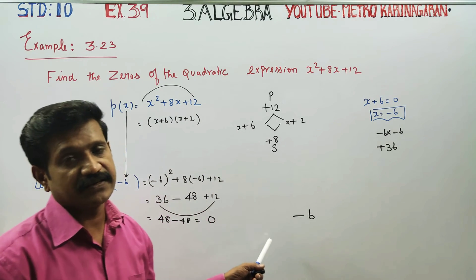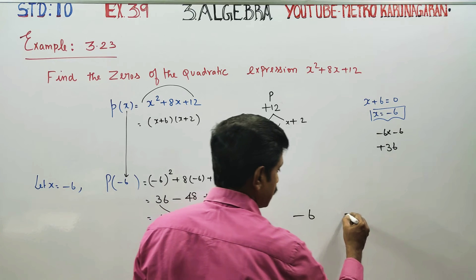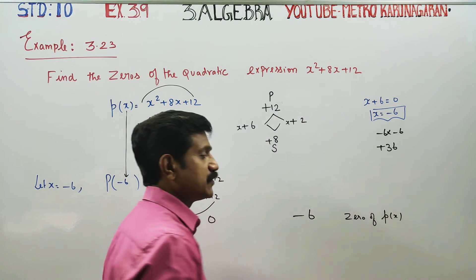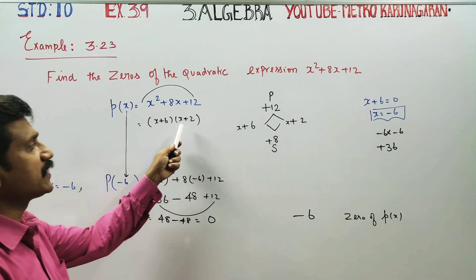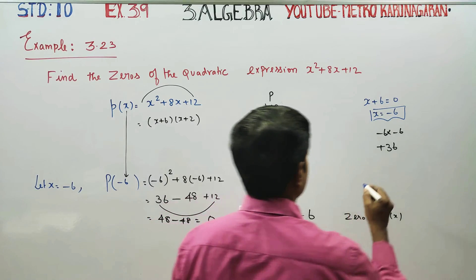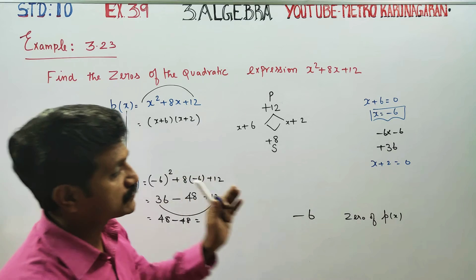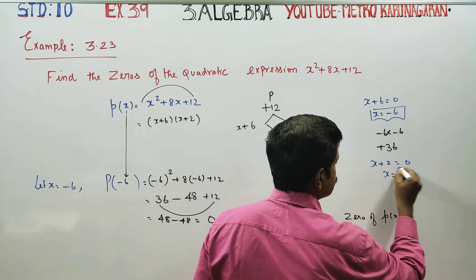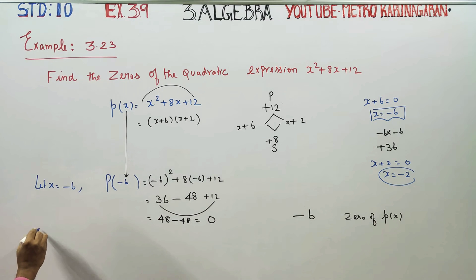Minus 6 is the zero of the polynomial P of X — that is the first zero. Because there are 2 factors: x plus 2 is equal to 0, minus 2. This is equal to minus 2. So, x is equal to minus 2.